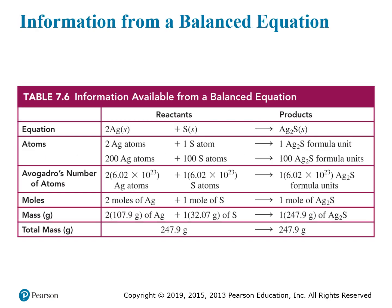This idea actually explains why you need to balance a chemical reaction. Take this example: we have silver plus sulfur forming silver one sulfide. You can think about it in terms of the balanced chemical equation where you have two silver plus one sulfur yields one silver sulfide. You can interpret that in terms of individual atoms.